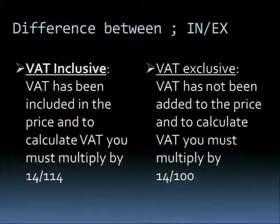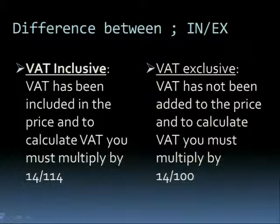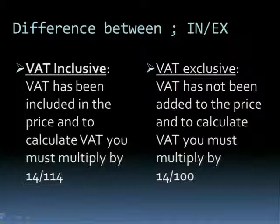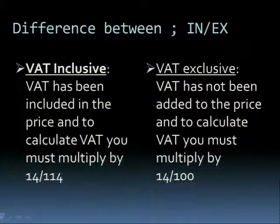Then we come to exclusive. VAT has not been added to the price. To calculate VAT, you multiply by 14 over 100. We agreed that VAT is 14 over 100, so we calculate it straightforwardly when it is excluded. With exclusive, the denominator is just 100. With inclusive, you include the 14 in the denominator, making it 114. The numerator always remains 14.